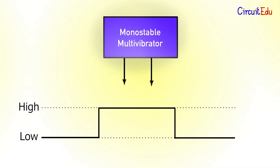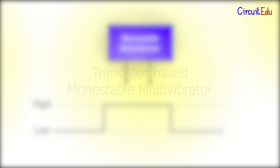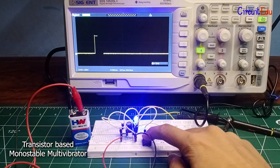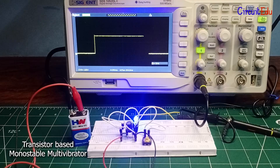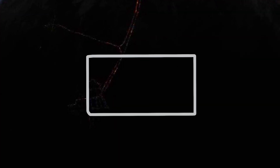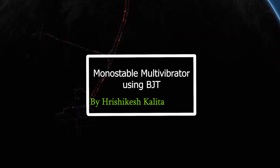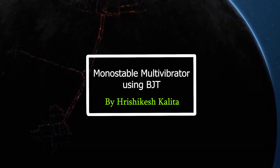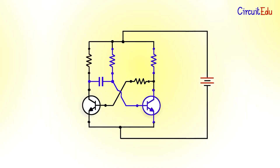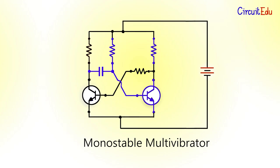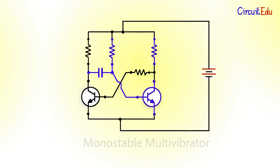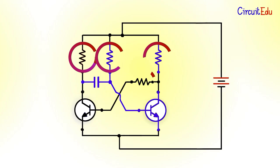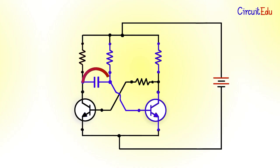In this video, we will learn how a transistor-based monostable multivibrator circuit works. This is the circuit diagram of a monostable multivibrator. The circuit consists of four resistors, one capacitor, and two transistors.